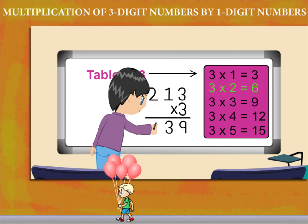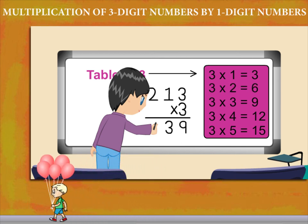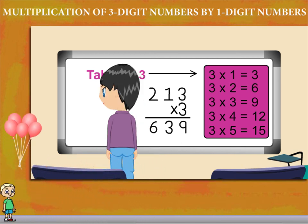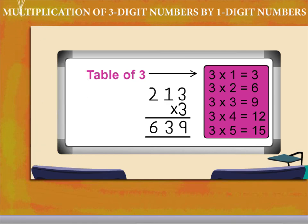3 2s are 6, so the product is 639. Good work!